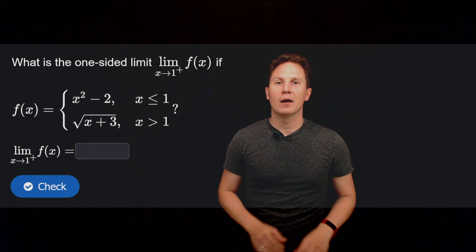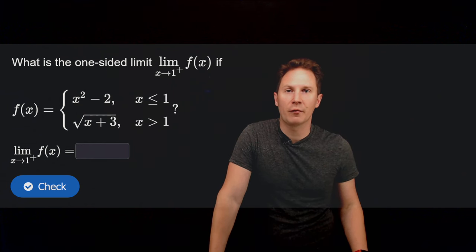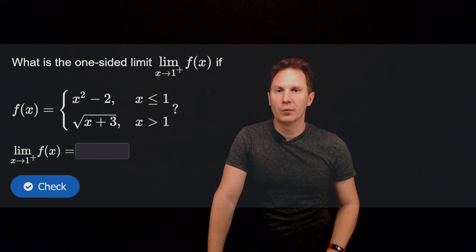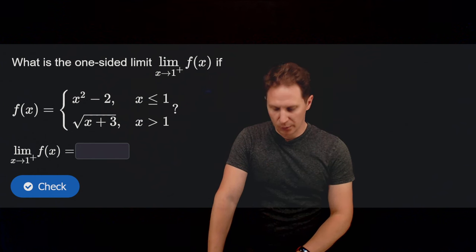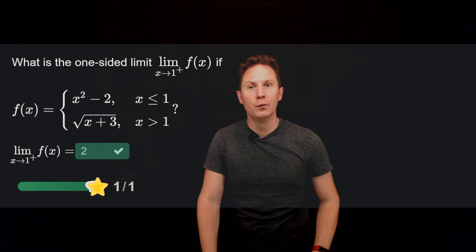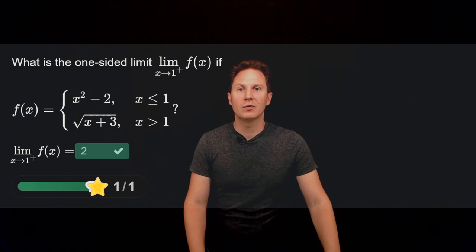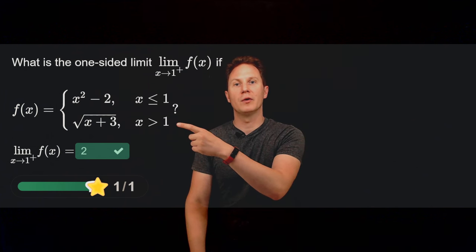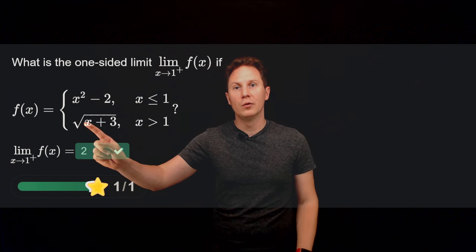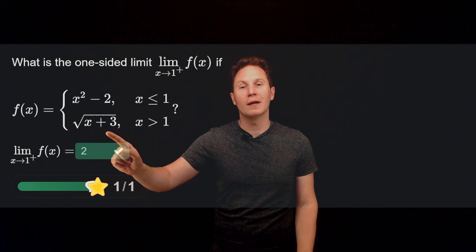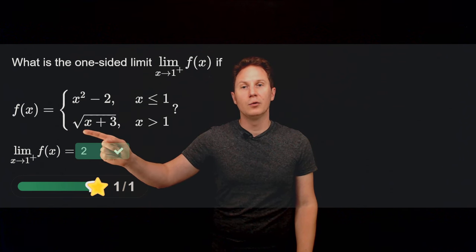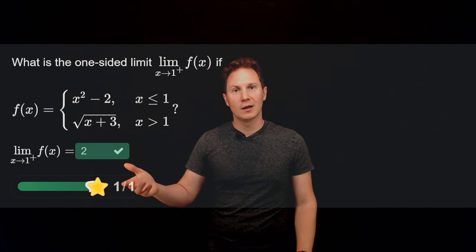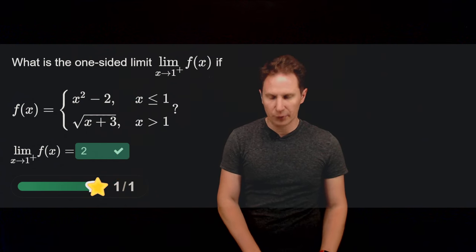What is the one-sided limit as x approaches 1 from the right of f(x), if f is defined in this piecewise way? Since x should be greater than 1 and approach 1 from the right, we look at the second piece: the square root of x plus 3. As x approaches 1, we get the square root of 1 plus 3, which is the square root of 4. Taking the positive square root gives us 2.